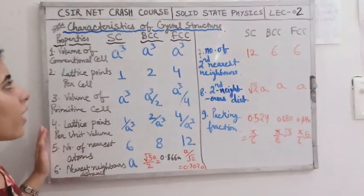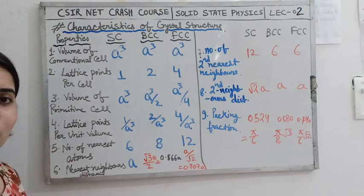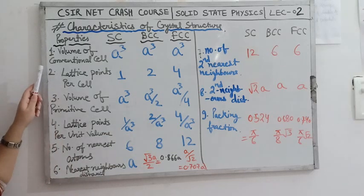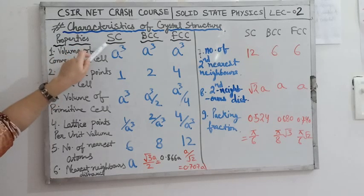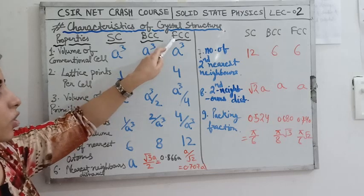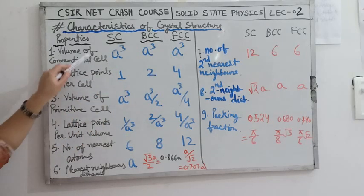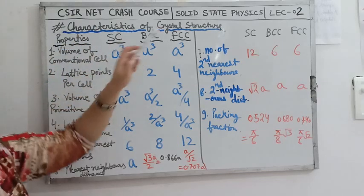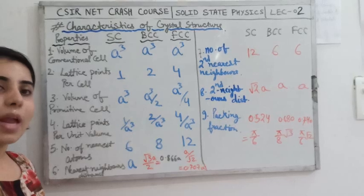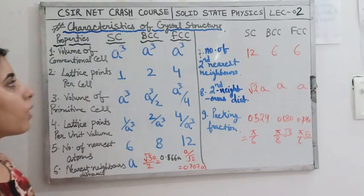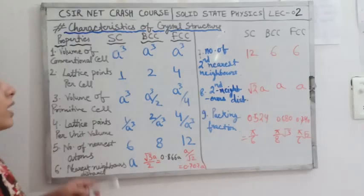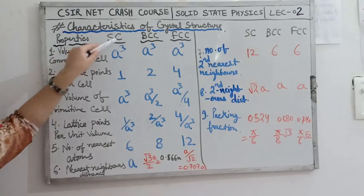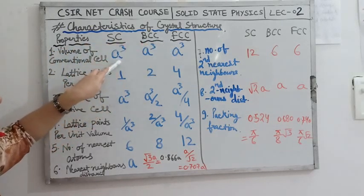First of all we are going to discuss the topic: characteristics of crystal structure. This is one of the important topics for the exam. We will discuss the volume of the conventional cell in case of simple cubic, body centered cubic, and face centered cubic structures. The volume of the conventional cell for all three is A cube, where A is the lattice parameter or lattice constant.